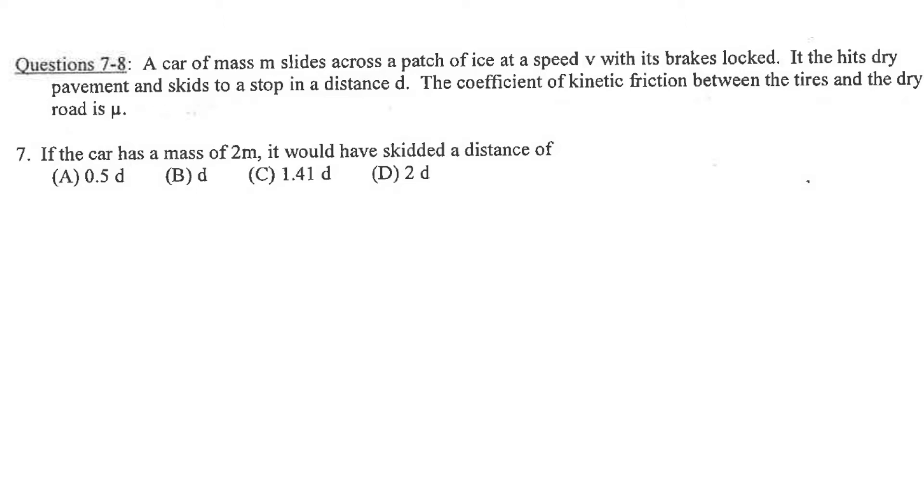It says a car of mass M slides across a patch of ice at speed V. And I think because it's ice, we're assuming ideal conditions, right? Ice has very low friction. And then all of a sudden it hits a dry pavement and it skids to a stop at a distance d. And the kinetic friction coefficient is μ.